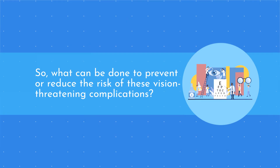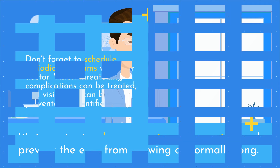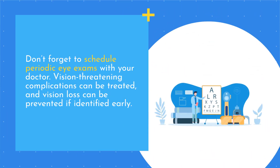So what can be done to prevent or reduce the risk of these vision threatening complications? It's important to keep myopia under control and prevent the eyes from growing abnormally long. Don't forget to schedule periodic eye exams with your doctor, as vision threatening complications can be treated and vision loss can be prevented if identified early.